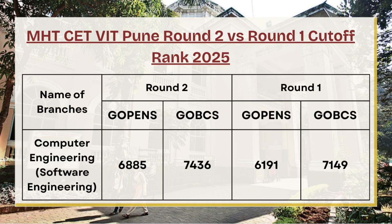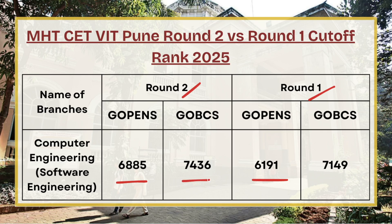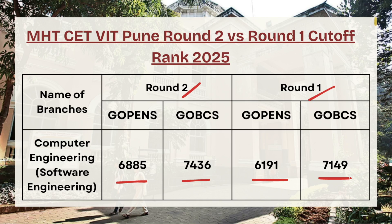Moving ahead, we have Computer Science and Software Engineering. For G Open category, the cutoff rank was 6,885 for round two whereas in round one it was 6,191. For G OBC category, the cutoff rank was 7,436 whereas in round one it was 7,149. By checking these comparisons between round one and round two, candidates can estimate the expected cutoff for round three and decide whether to opt for the float process — going to round three counseling — or accept the allocated seat in round two.